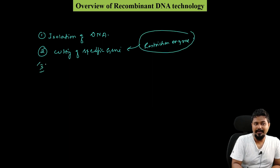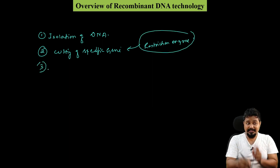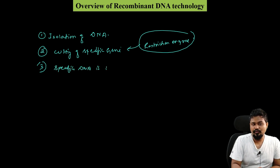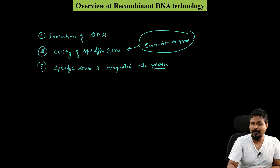The third step is integration of the specific DNA into a vector. We integrate the gene of interest into vectors such as plasmids.